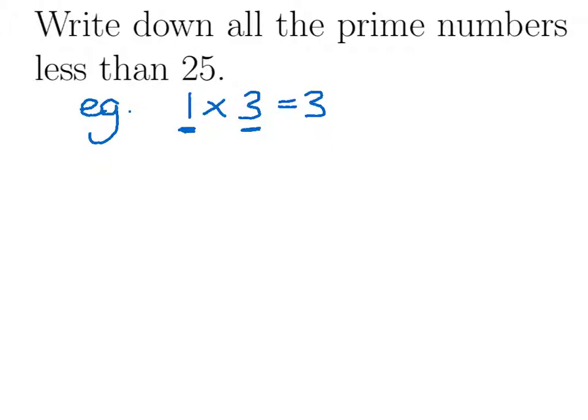Another example of a prime number would be 7, because 1 times 7 is the only way you can multiply to make 7, and so we have two factors again, 1 and 7.